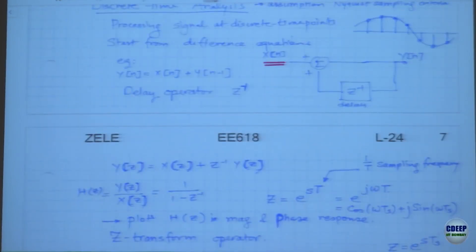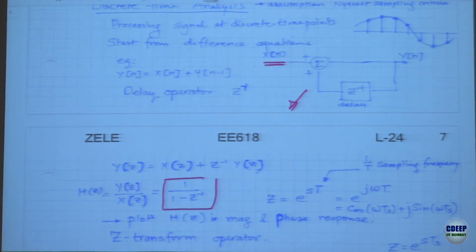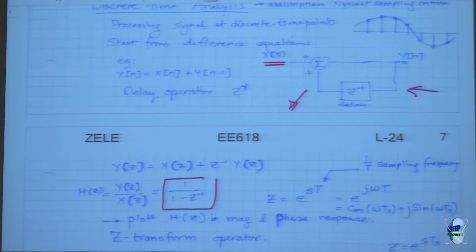When you analyze this transfer function, it comes out to be 1 divided by (1 minus Z^(-1)). Taking this numerically, we figured out it's nothing else but a moving summation of all past inputs — that's called integration. So this represents integration.